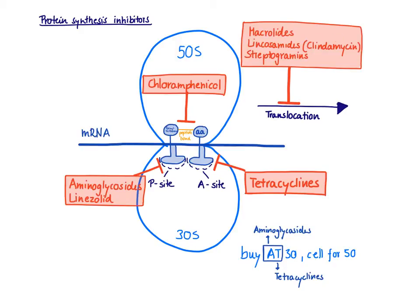Besides knowing which specific step in protein synthesis is inhibited by a specific drug class, you should also know from which subunit of the ribosome this inhibition is taking place. For example, the P site could be inhibited from the 30S subunit (from the bottom) or from the 50S subunit (from the top). It turns out that aminoglycosides inhibit the P site from the 30S subunit, and linezolid inhibits the P site from the 50S subunit. This is not clinically relevant, but it is frequently tested on the boards.